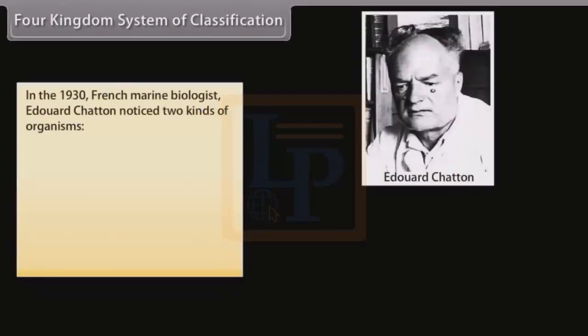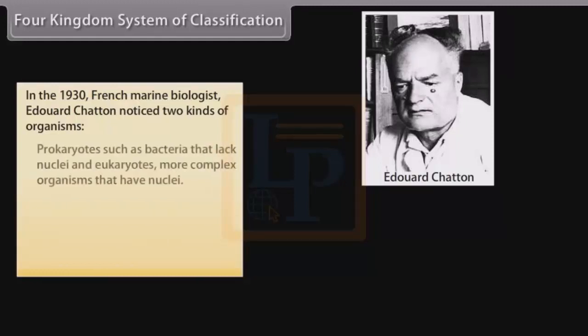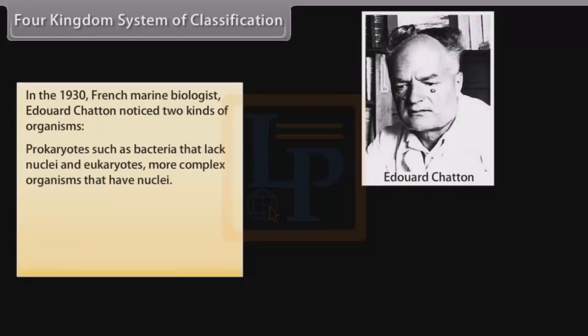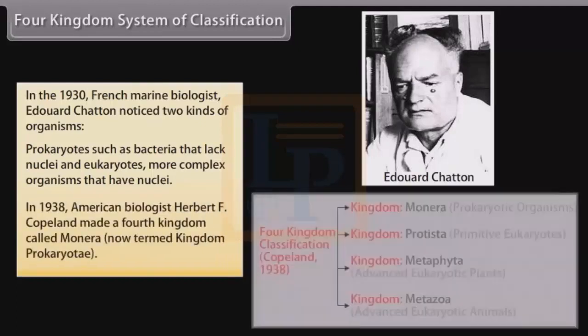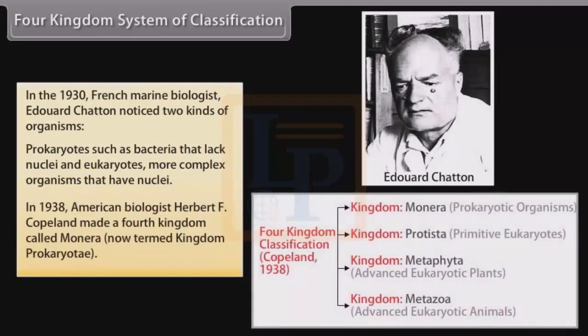Four Kingdoms System of Classification: In the 1930s, French marine biologist Edward Chatton noticed two kinds of organisms — prokaryotes such as bacteria that lack nuclei, and eukaryotes, more complex organisms that have nuclei. In 1938, American biologist Herbert F. Copeland made a fourth kingdom called Monera, now termed Kingdom Prokaryote.